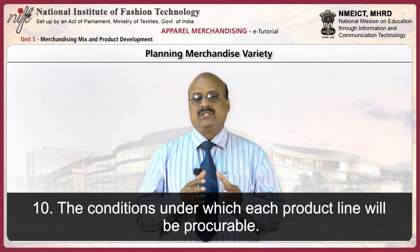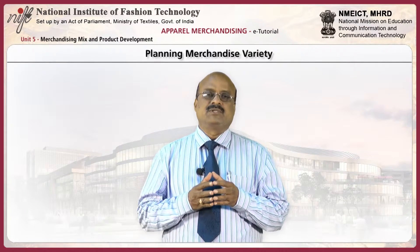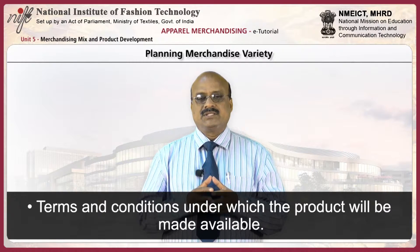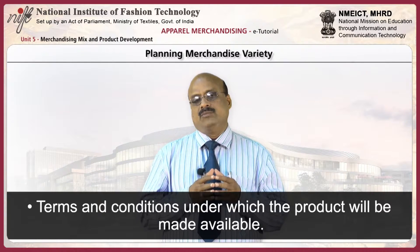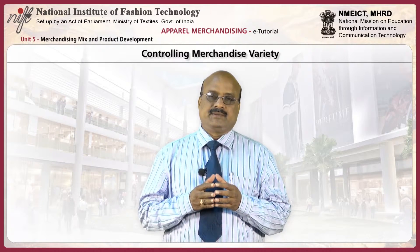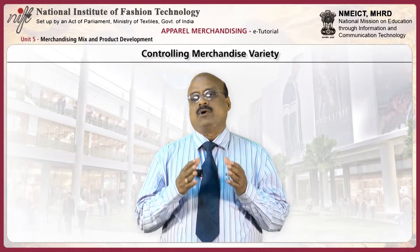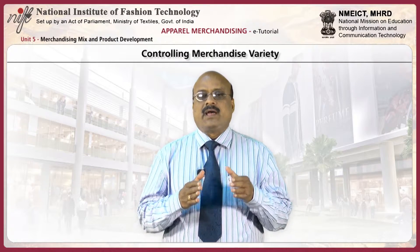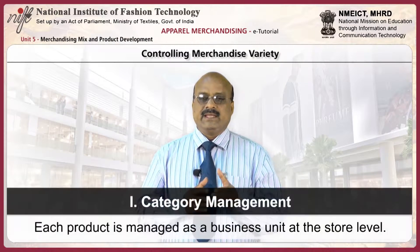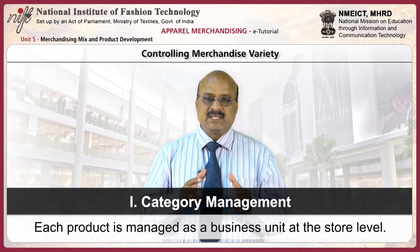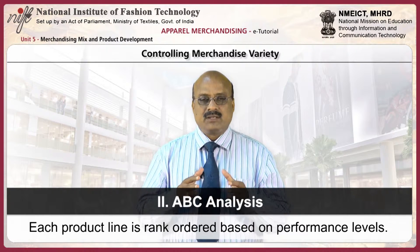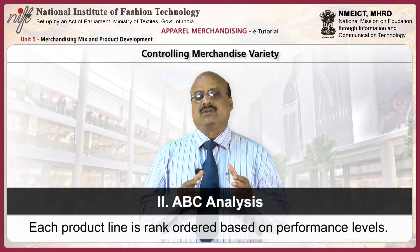The conditions under which each product line will be procurable must be considered, including availability and reliability of various suppliers, and terms and conditions under which product will be made available. Controlling merchandise variety is both an art and a science. There are no specific rules for what should be included in the merchandise mix and what should be excluded. Two useful management methods are category management — where each product is managed as a business unit at the store level — and ABC analysis — where each product line is rank ordered based on performance levels.